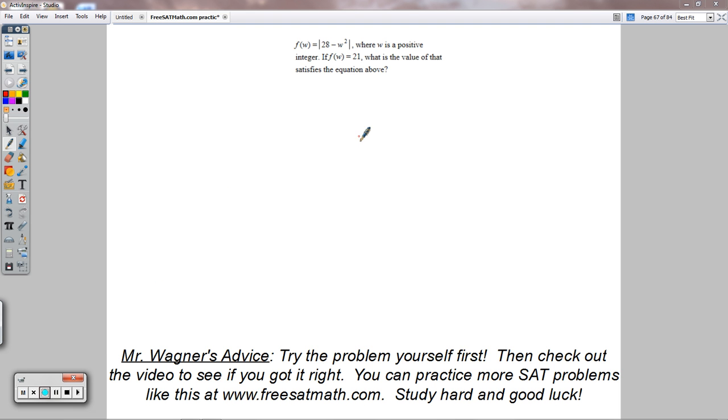Welcome to SAT math question 67 here on Wagner Academy. This one says f of w equals the absolute value of the quantity 28 minus w squared, where w is a positive integer.